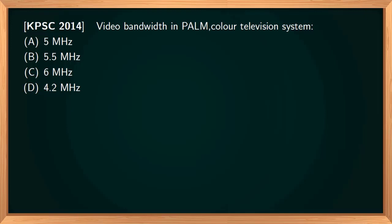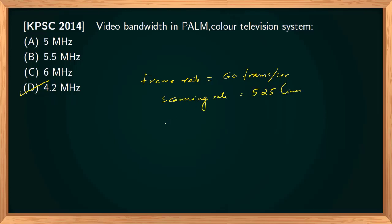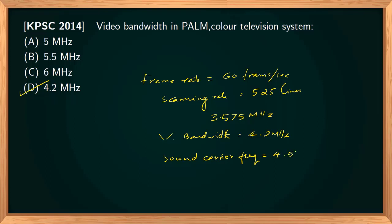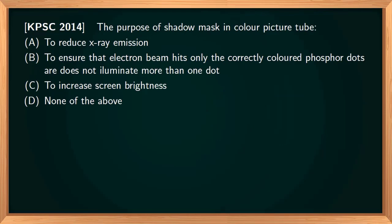The video bandwidth in the PAL-M color television system is 4.2 MHz. Other standards for this system: frame rate is 60 frames per second, scanning rate is 525 lines, color subcarrier frequency is 3.575 MHz, sound carrier frequency is 4.5 MHz, and video bandwidth is 4.2 MHz. The correct option is 4.2 MHz.